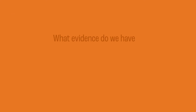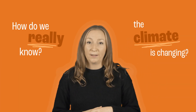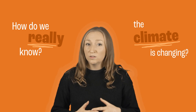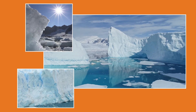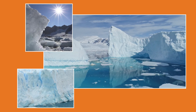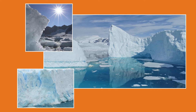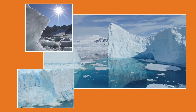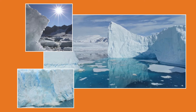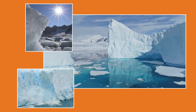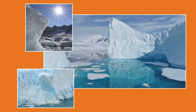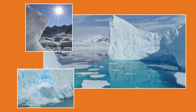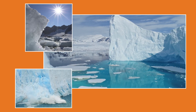What evidence do we have of climate change? How do we really know that climate change is happening? Ice cores show us changes in greenhouse gas levels in the atmosphere up to 400,000 years ago. They prove that there are more greenhouse gases in our atmosphere than there ever used to be. We can use photographic evidence to show how much ice has been melting over the last 50 to 100 years. And we can also look at the changes in sea levels — average sea levels have risen by 20 centimetres since the year 1900.